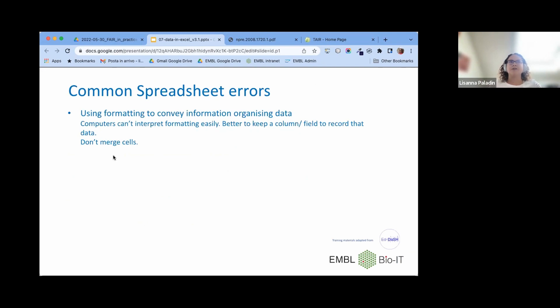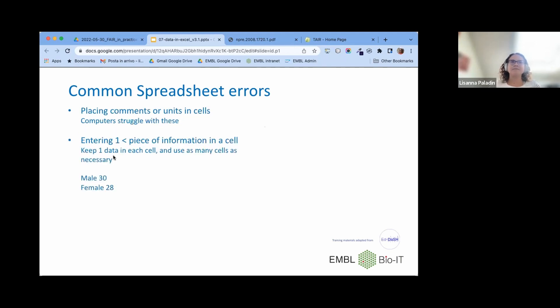Going on with the common spreadsheet errors. Also using formatting to convey information or organizing data. That's something that we extensively commented about, the fact that computers don't really interpret formatting easily. Placing comments or units. Comments also disappear when you export to different formats. Even if you open the same file with a different program, for example, if you open an Excel sheet with Google Sheets, comments might disappear depending on the type or version of this Excel file. Comments are not something that travels together with the data.